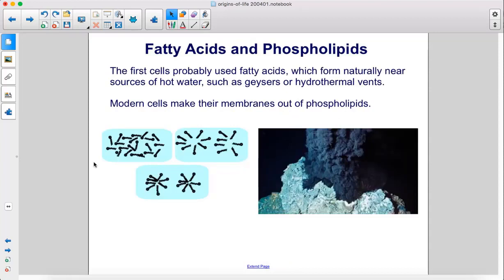The first cells probably used fatty acids, which form naturally near sources of hot water, such as geysers or hydrothermal vents. Modern cells make their membranes out of phospholipids.